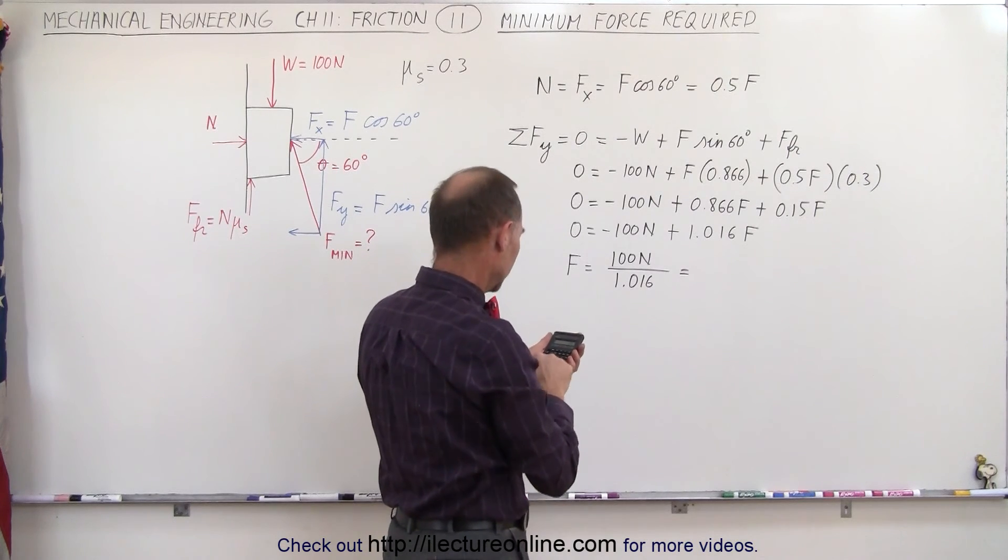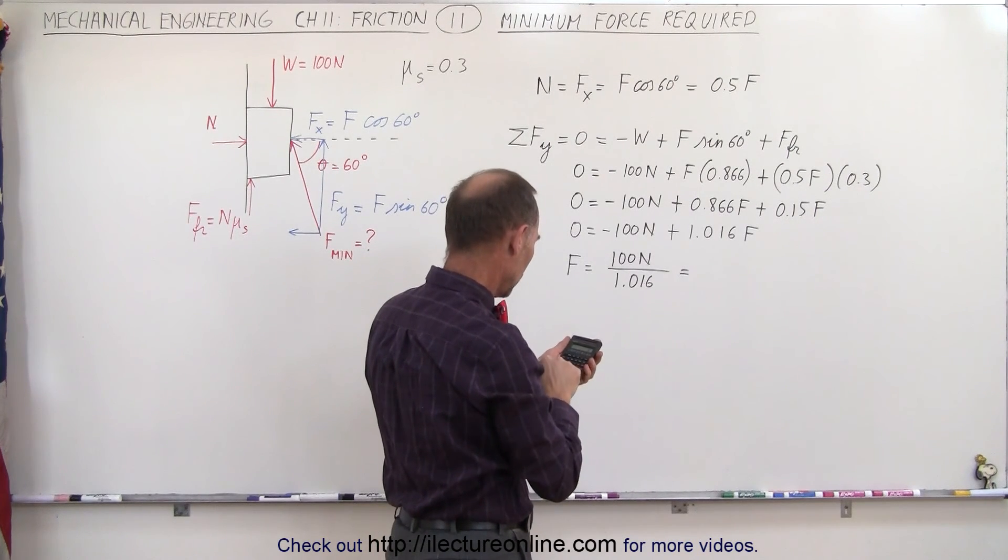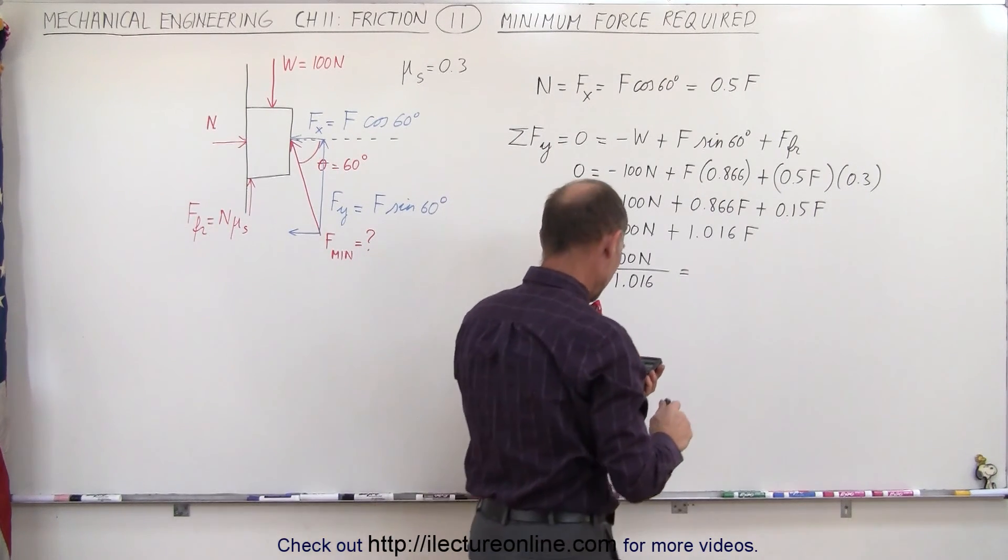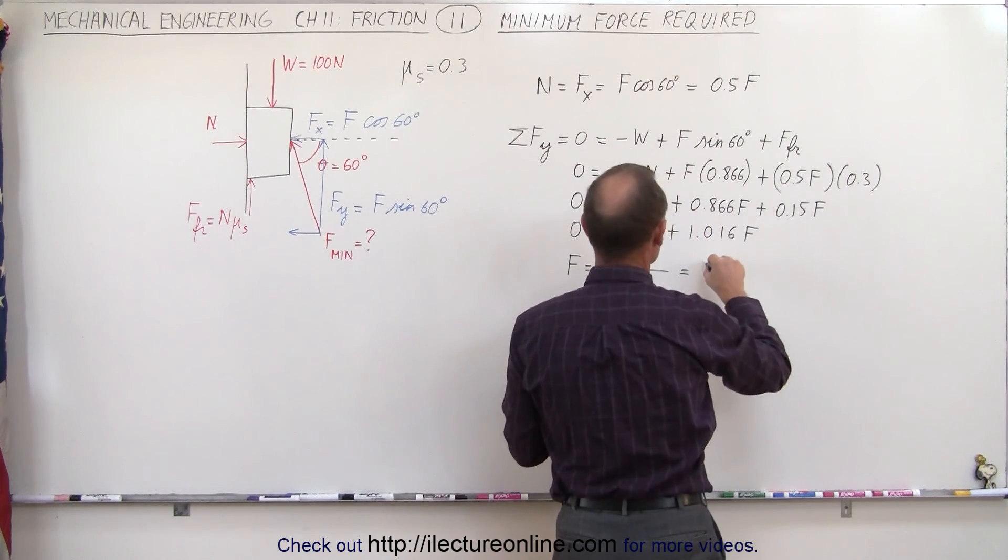Here, 100 divided by 1.016 equals 98.4 newtons.